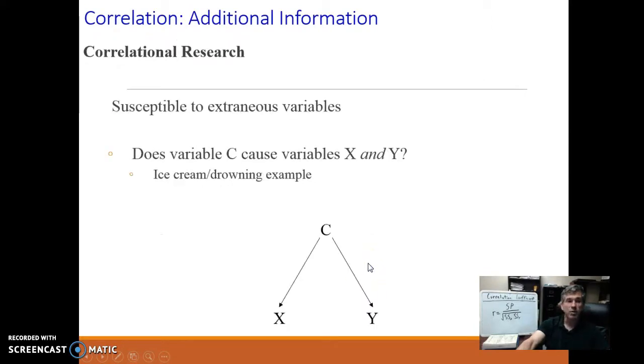One of the reasons we can't confirm causality is that correlations are susceptible to extraneous variables. Two variables can be very strongly related, but neither one of them might be causing the other. For example, there is a positive correlation, it's a little morbid, between ice cream sales in the community and drowning rates in those communities. However, neither one of those is causing the other. Eating more ice cream isn't causing more drowning, drowning more isn't causing more ice cream sales. Instead, there's a third variable that's causing both of those. Can you guess what it is? It's temperature or heat.